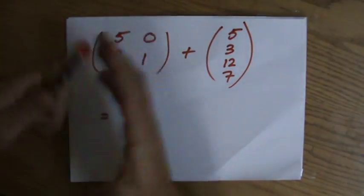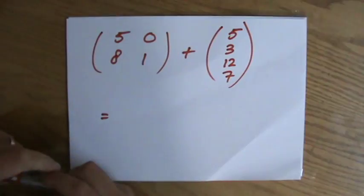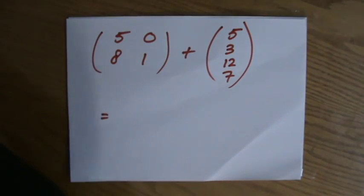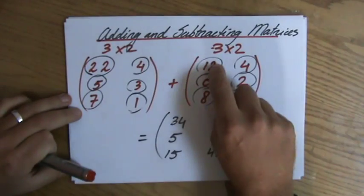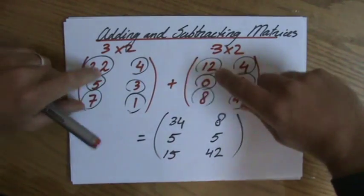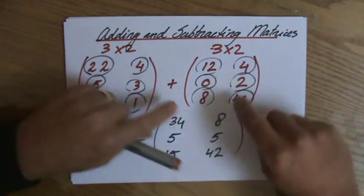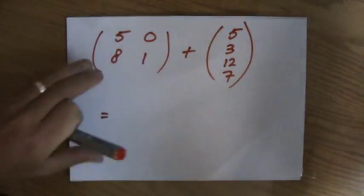Now, which position relates to the position in the other matrix? Like, if I go back to my first question, I do 22, and that one is exactly in the same position, that's 34, and 4 plus 4, that's 8. But in this particular case...